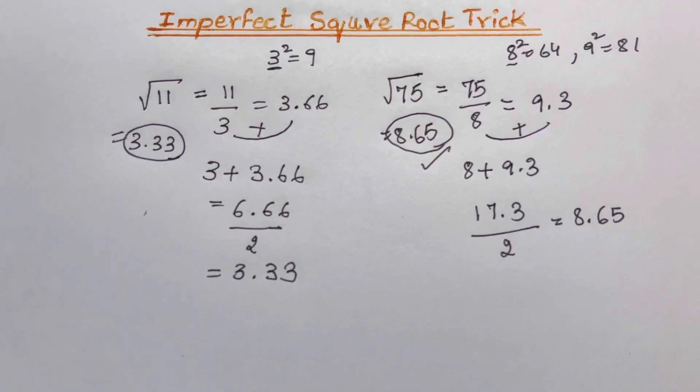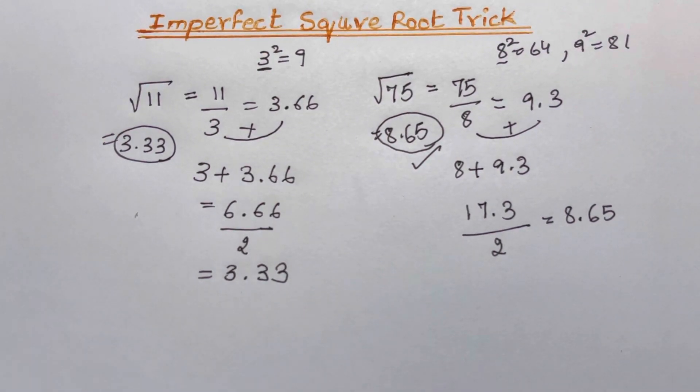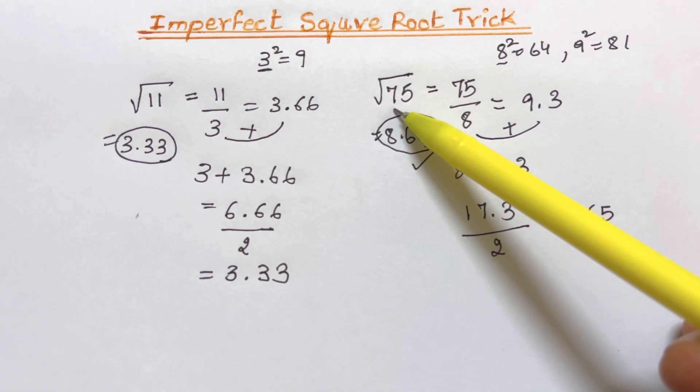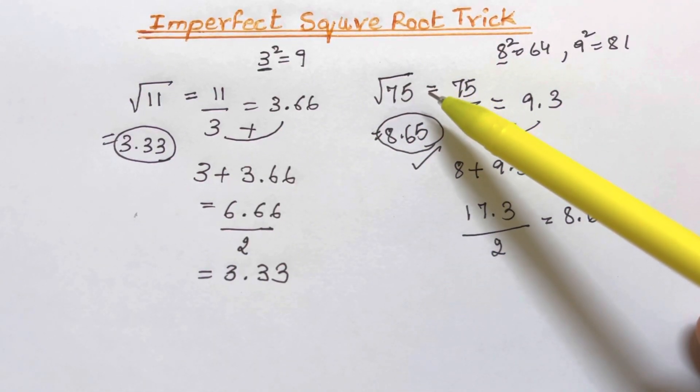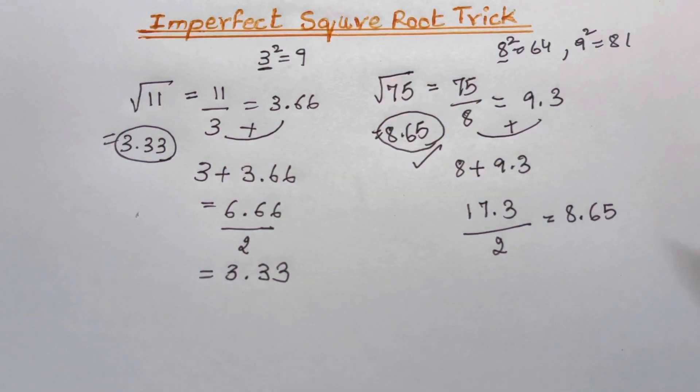So this is how you find the imperfect square root of any number. In my next part of the video I'm going to show you if they are asked to find the square root of a decimal number. So stay tuned watch the next part of the imperfect square root trick for this and if you like this video please share and subscribe with your friends. Thank you so much.